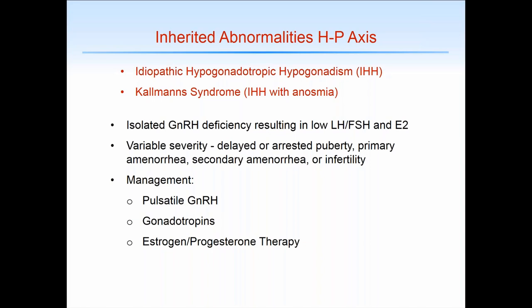Management of IHH depends on what's trying to be achieved. Pulsatile GnRH will generally be effective but is clinically not often available and much more difficult to provide via a pump, so generally not used. Gonadotropins are certainly first line in the treatment of infertility. If the patient is not trying to get pregnant, you may give estrogen-progesterone therapy for bone protection. For those patients who have not gone through puberty, they may be given estrogen to complete puberty and then need progesterone for endometrial protection.